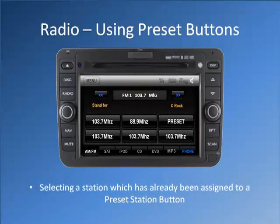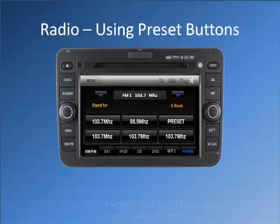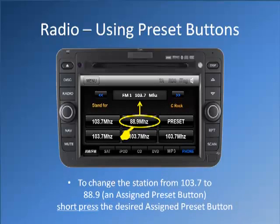Selecting a station which has already been assigned to a preset station button. To change the station from 103.7 to 88.9 and assign a preset button, short press the desired assigned preset button.